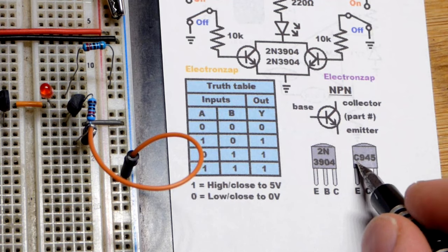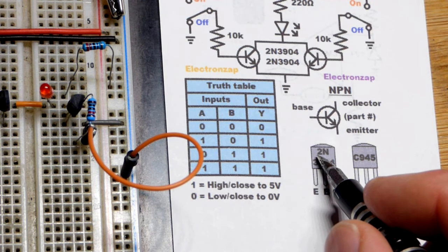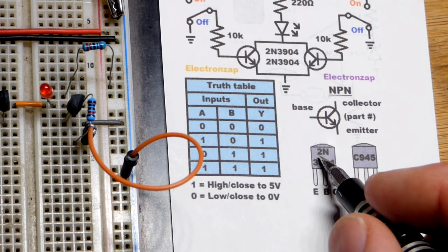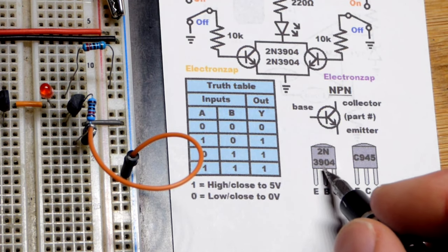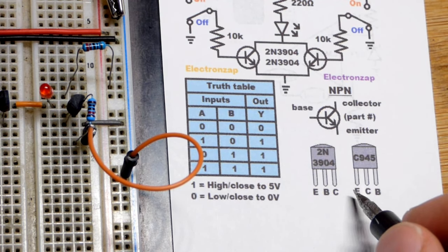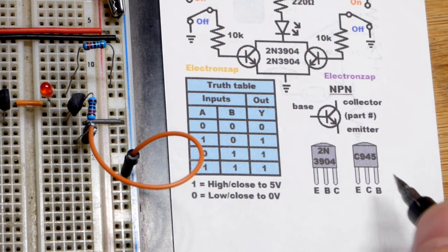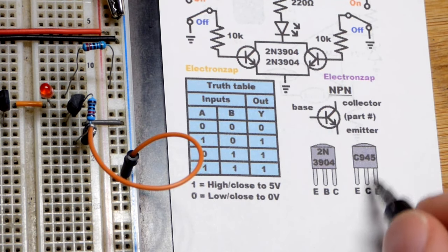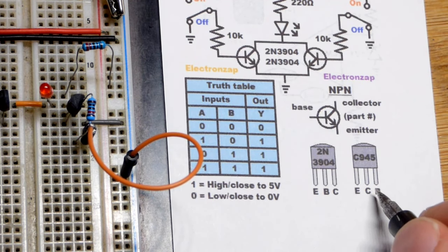If you use a transistor with a different part number, especially if it doesn't start with 2N, I believe all the bipolar junction transistors that start with 2N, verify that it is a bipolar junction transistor, will have this pin layout. But, other ones could have a different pin layout altogether.